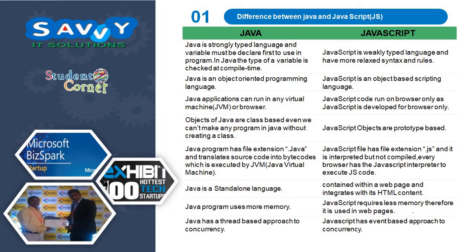Some more differences between Java and JavaScript: Java is a strongly typed language and variables must be declared before use in a program. In Java, the type of a variable is checked at compile time. JavaScript is a weakly typed language and has more relaxed syntax and rules.